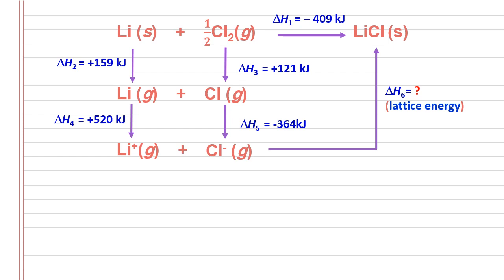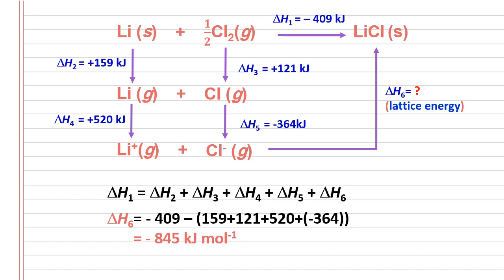So lastly, we're going to add them all together in clockwise and anticlockwise like this. You're going to equate delta H1 equal to delta H2 plus delta H3 plus delta H4 plus delta H5 plus delta H6. You want to find delta H6, set it aside, and lastly you will get negative 845 kilojoule per mole.